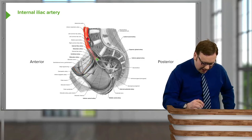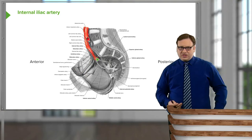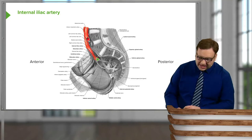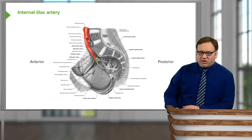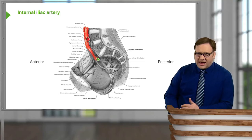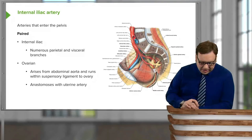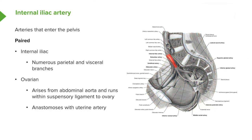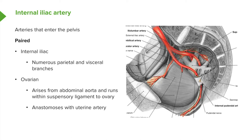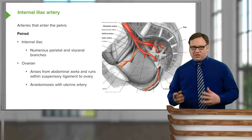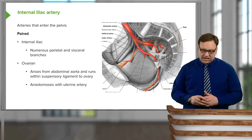We can see the internal iliac passing down over the pelvic brim into the pelvis, giving rise to a whole series of branches. In the cadaver these branching patterns are incredibly variable, but they tend to divide into an anterior division and a posterior division. These give rise to numerous parietal branches supplying the body wall and visceral branches supplying the organs.